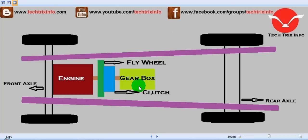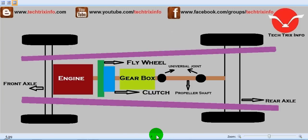Next we have the gearbox — the transmission system — which consists of gears for manual transmission vehicles. For automatic transmission vehicles, it will have just high and low gears as per the design. This gearbox comes after the clutch, or after the CVT or torque converter in automatic vehicles.